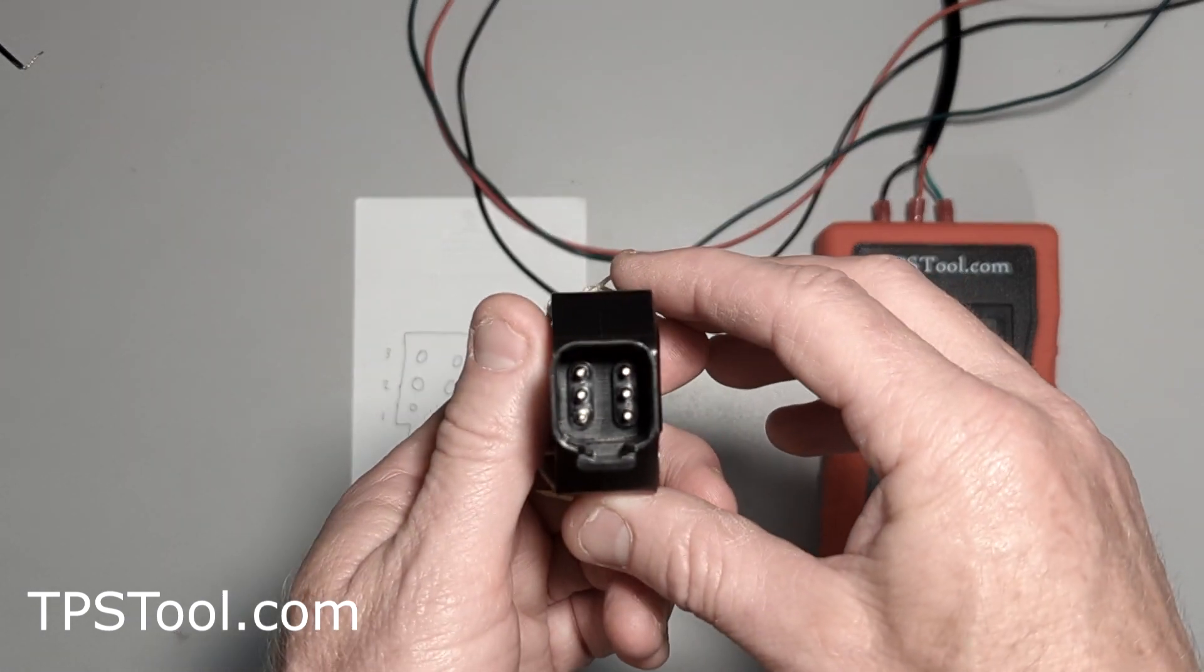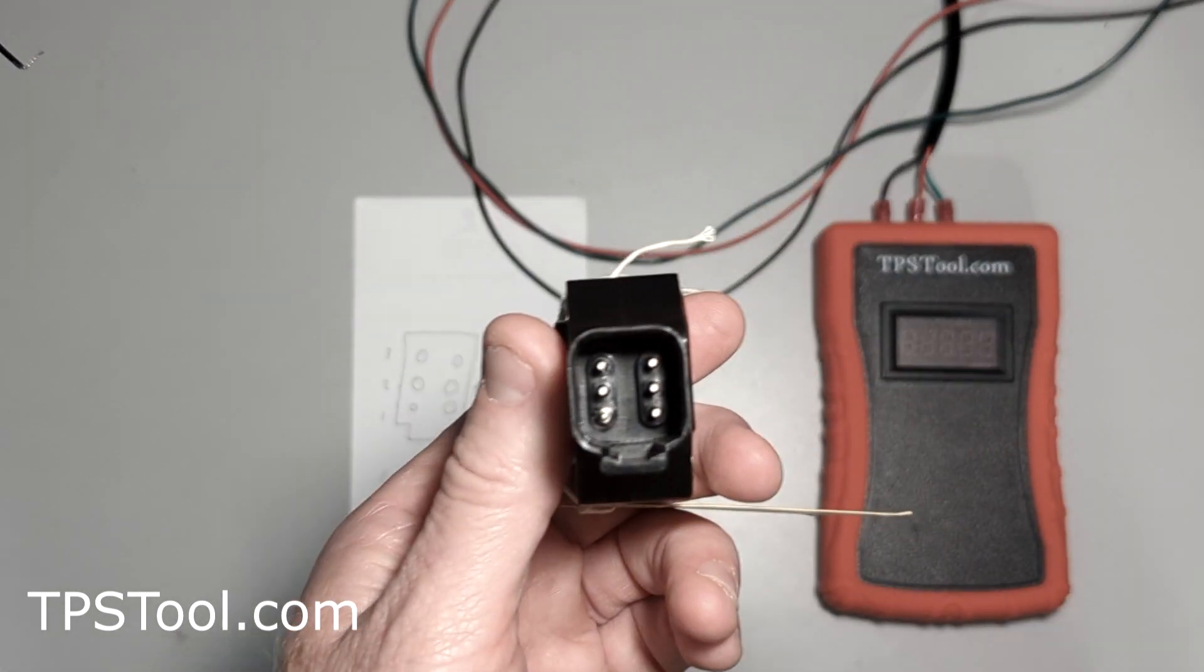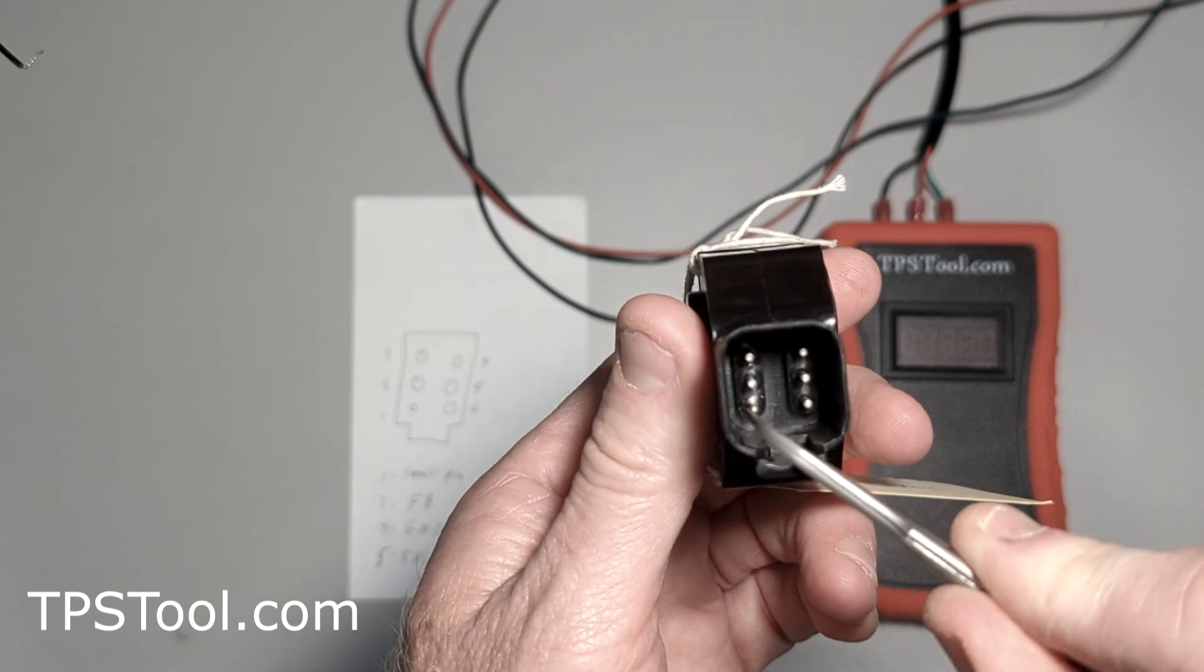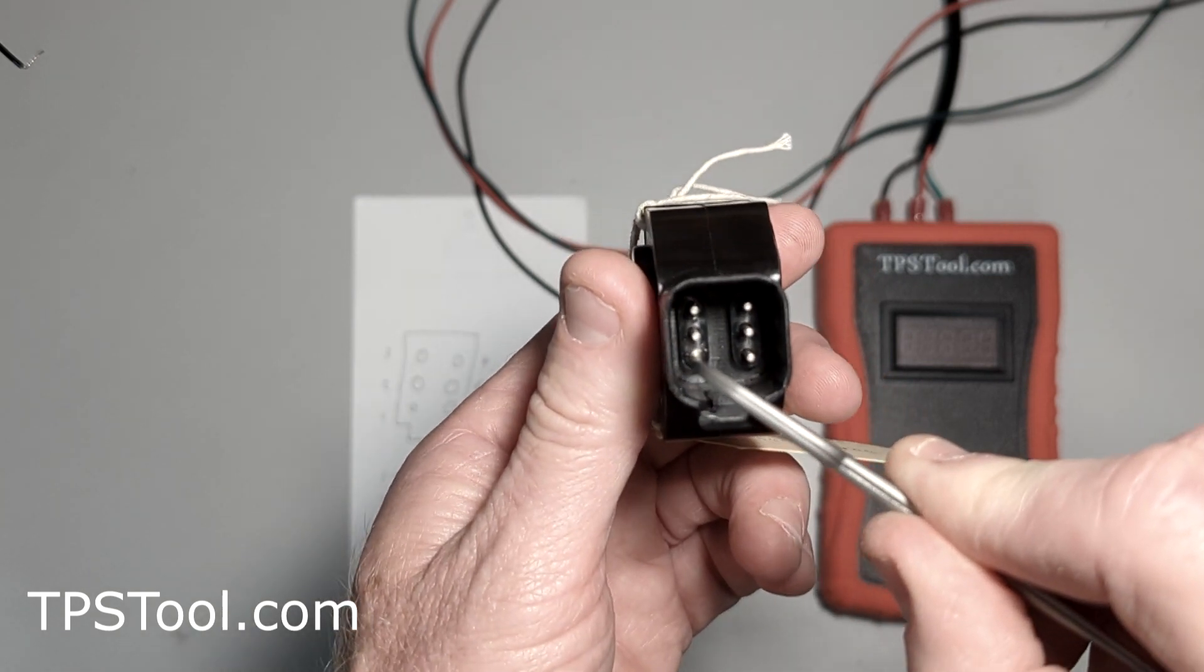This sensor has really thick pins, and one is smaller than the rest. This one right here in this corner is smaller than the others. That's pin one.